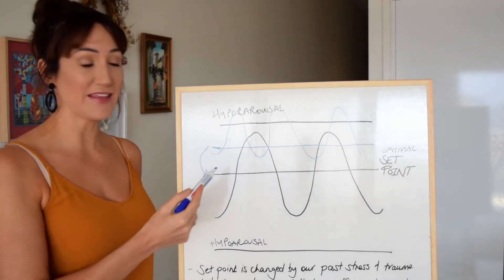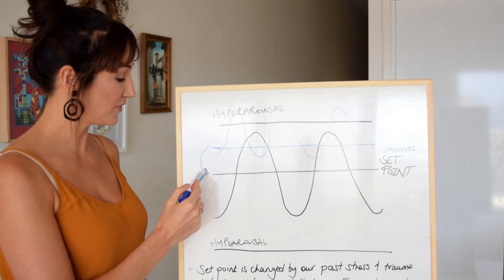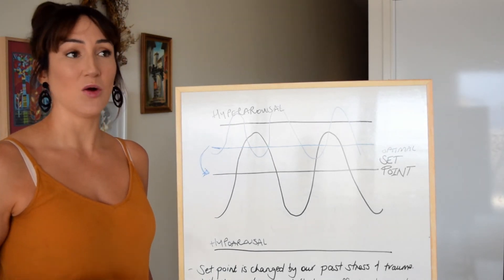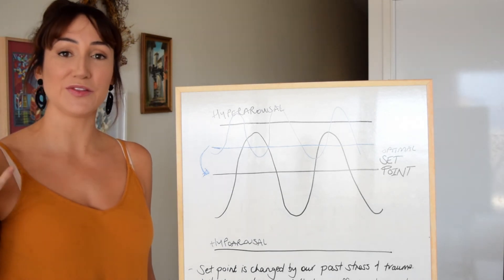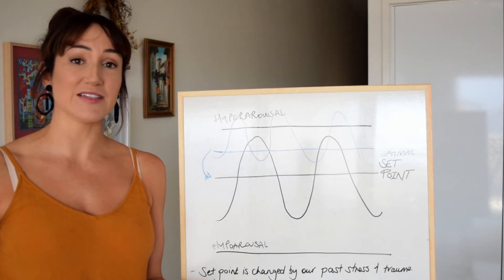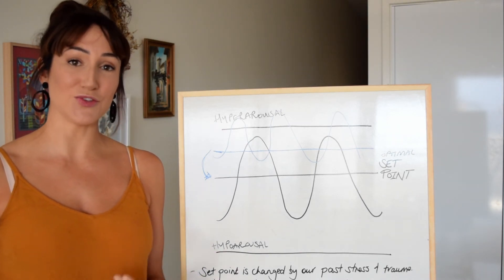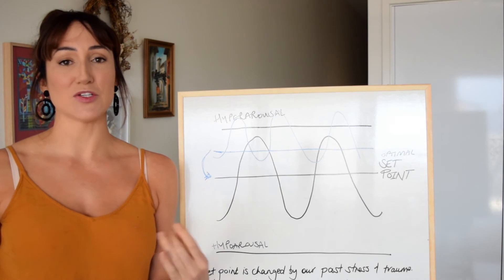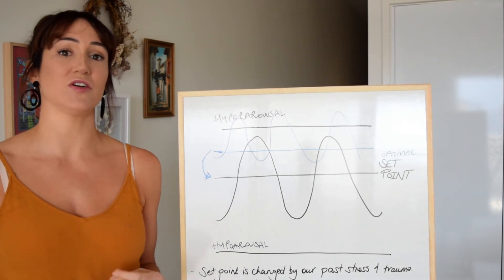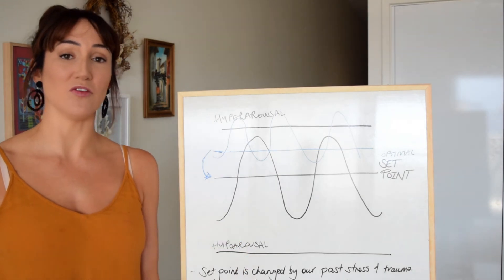The key is we want to bring that set point back down so that we are at a more optimal place where our physical health, emotional and cognitive wellbeing can all thrive. We can utilize practices in the body to do this. When we tap into bottom-up processes, we can actually have the best result at changing the set point of our physiology.